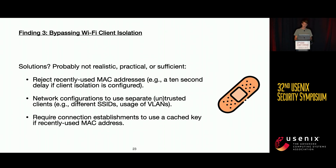Some mitigations to consider: you can reject a reconnection from a MAC address that was recently used — a defense already implemented by one vendor. Alternatively, in networks where client isolation is important, you can force the use of separate networks for isolated clients. Finally, you can use cached keys when reconnecting using a prior MAC address, though this requires support from all clients in the network.